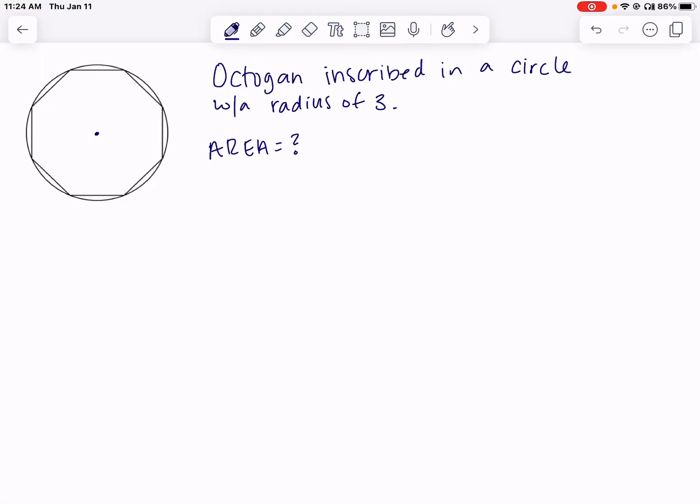In this video, we're going to look at how to find the area of the octagon shown here. This octagon is regular, which means all side lengths are the same, and it's inscribed in a circle. The circle has a radius of 3. That's all the information we need to find the area of this entire octagon.